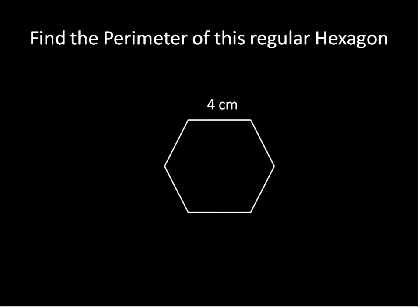Let me show you an example. If this is a regular hexagon, that means all of the side lengths are the same. All of the angle measurements are the same too — that's what regular means. This hexagon has side lengths of 4 centimeters. So to calculate the perimeter using this equation, we multiply the number of sides, which is 6 for a hexagon, times the length of the side, which is 4. 6 times 4 is 24 centimeters — that's the distance around the outside of this figure.